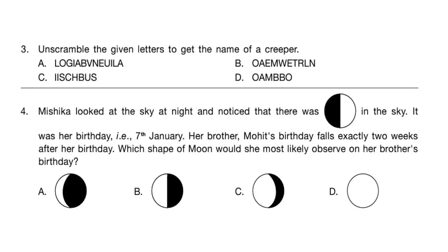Question 3: Unscramble the given letters to get the name of a creeper. When we unscramble the options we get: A — Bougainvillea, B — Watermelon, C — Hibiscus, and D — Bamboo. Which of these is a creeper? Option B — Watermelon is a creeper. So the answer is option B.